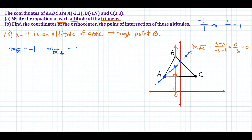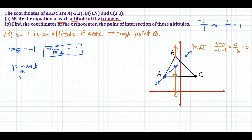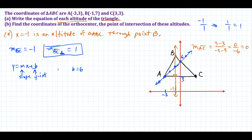Using that slope of positive 1 starting at A and going up 1 to the right 1, we can see this forms a line perpendicular to side BC — this is the correct slope for the altitude to side BC. Now we need the equation of this line using y equals mx plus b, where m is the slope and b is the y-intercept. Since we're starting at point A at negative 3, 3 and going up 1 over 1, we hit the y-axis at 4, 5, 6. So our y-intercept is 6 and the slope is positive 1. The equation of the altitude through A is y equals x plus 6.